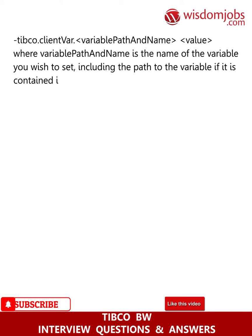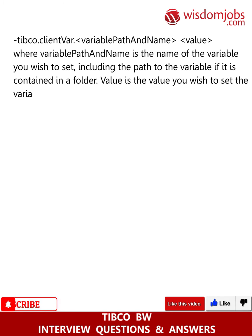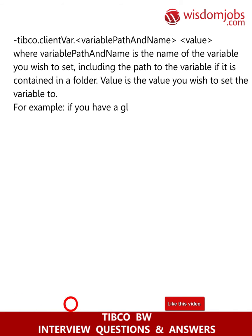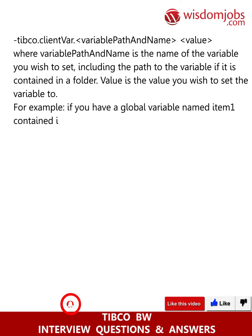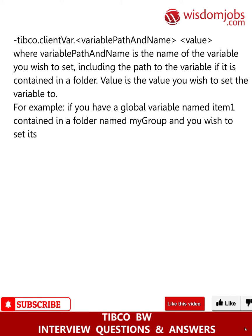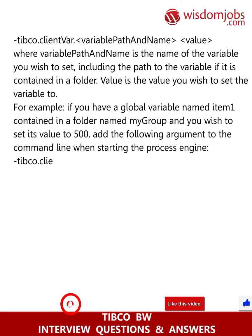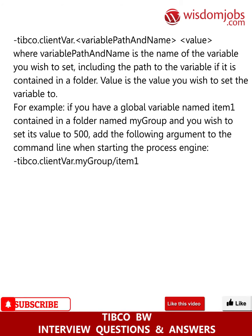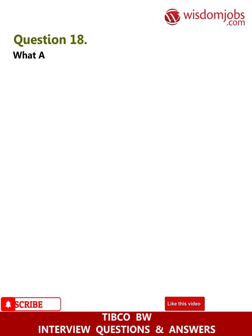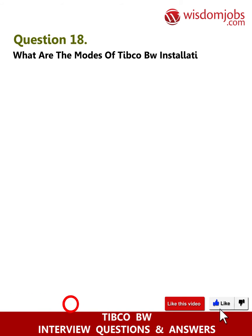Here, variable path and name is the name of the variable you wish to set, including the path to the variable if it is contained in a folder. Value is the value you wish to set the variable to. For example, if you have a global variable named item1 contained in a folder named MyGroup and you wish to set its value to 500, add the following argument: -com.tibco.clientVar.MyGroup/item1=500.